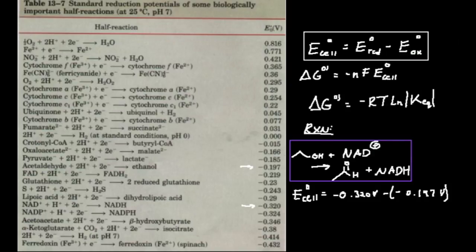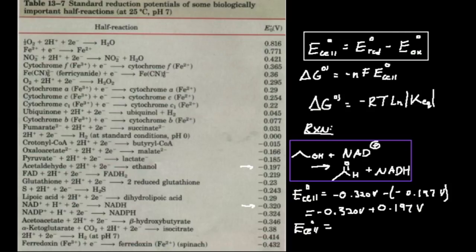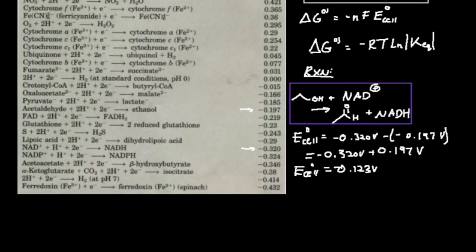This can be rewritten as negative 0.320 volts plus 0.197 volts. Running that in the calculator: negative 0.320 plus 0.197 gives a standard cell potential of negative 0.123 volts. That's my cell potential.